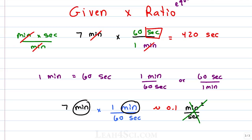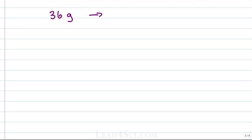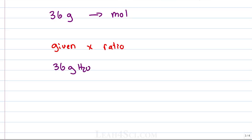Let's try this for the water example: 36 grams of water converted to moles. How do we set this up? Once again: given times ratio. We are given 36 grams of water and we want to convert it to moles, so we need to know the relationship between grams of water and moles of water. You can reference the periodic table — hydrogen has a mass of 1, oxygen is 16, giving us 18. So 1 mole of water equals 18 grams.